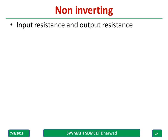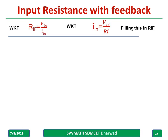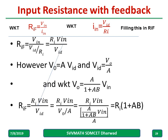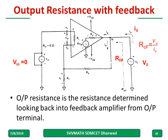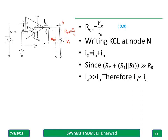For input resistance with feedback: Rif is given by applying Ohm's law. The derivation is straightforward — you can pause and glance through the steps. The same procedure applies for output resistance. KCL is applied: incoming current equals outgoing current. Pause and try to understand — all steps are given.